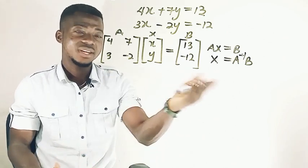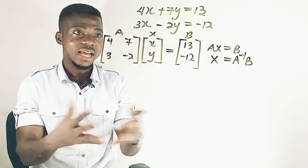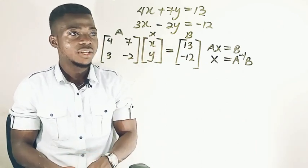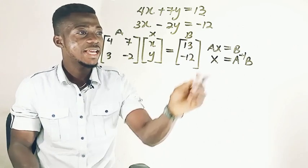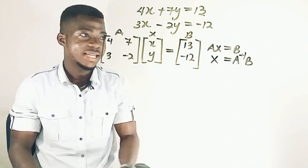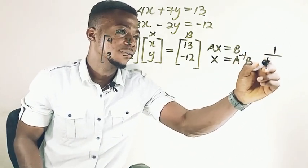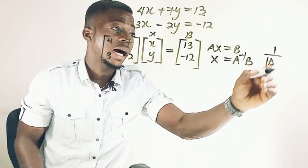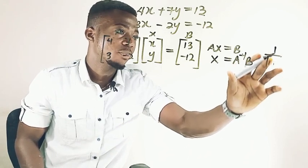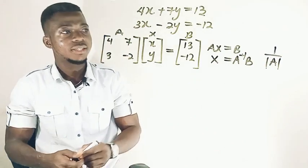This is matrix, and it's very simple to solve this kind of matrix. So the first thing you have to do, we're going to find the inverse of A. That one is giving us 1 over the determinant. So 1 over the determinant of A.